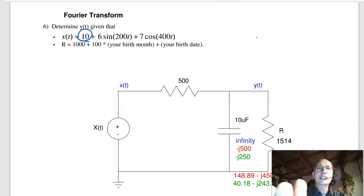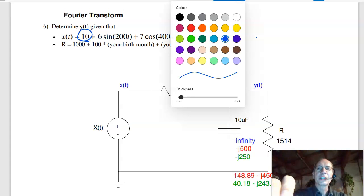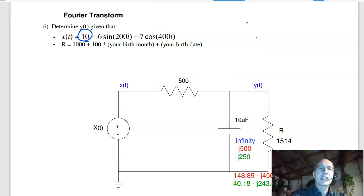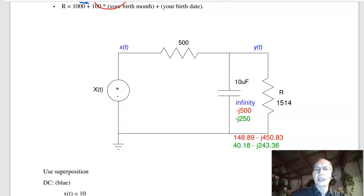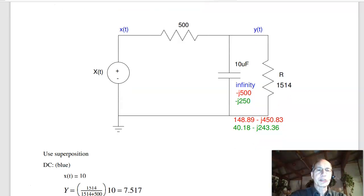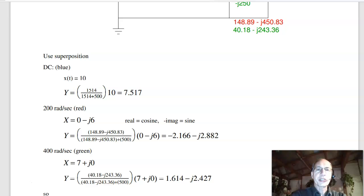Next, at 200 radians per second. At the 200 radians per second term is this guy. The capacitor at 200 radians per second is minus j500. In parallel with 1514 gives you 148 minus j450. Now use voltage division. It's what you're measuring, the 148 minus j450 over the total times the input. Real is cosine, minus j is sine. This is sine of 200t. Gives you the 0 minus j6. And here's your answer. The real part is cosine, minus j is sine.